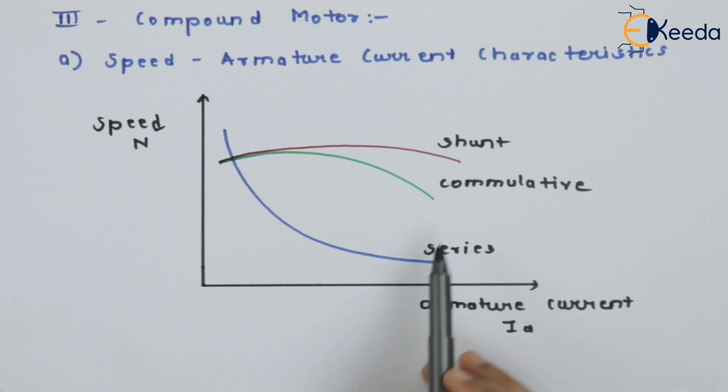Now, for the series, shunt and cumulative motor, the characteristic can be shown as shown in the figure. This characteristic is found by combining the characteristic of DC shunt motor and DC series motor.